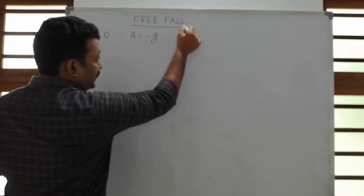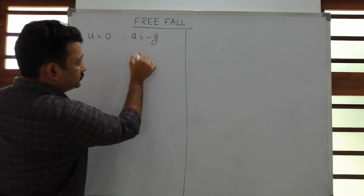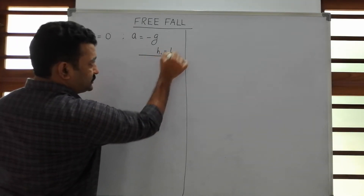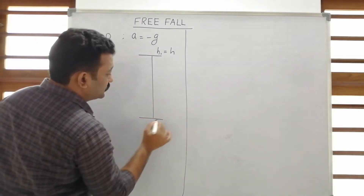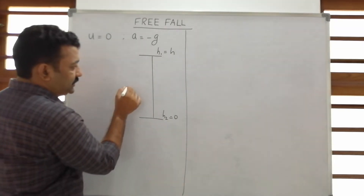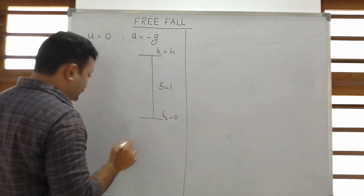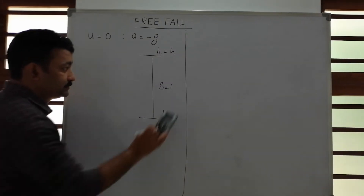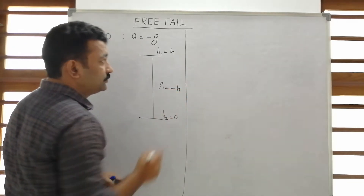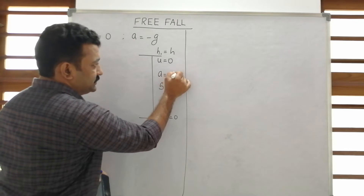For that particle, let's say it starts from a height h and it falls to earth, so h₂ is equal to zero. Immediately we can say it has a displacement equal to zero minus h, which is equal to minus h. The particle's displacement is minus h, and we have u equal to zero and a equal to minus g.